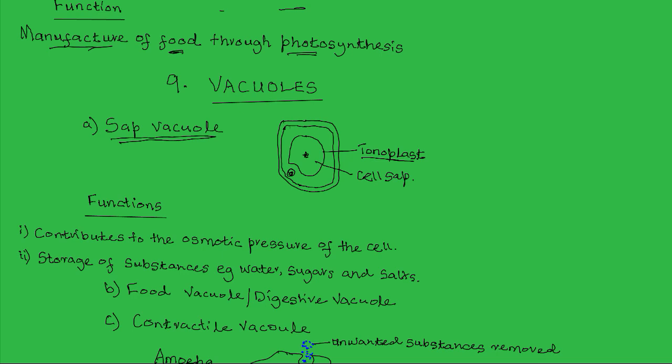Functions of the sap vacuole: One, it contributes to the osmotic pressure of the cell. The osmotic pressure is the tendency of a solution to draw in water from the surrounding. The stored salts and sugars in the cell sap contribute to the osmotic properties of the cell. The higher the concentration of the salts and sugars, the higher the osmotic pressure that will be generated by the sap vacuole, and the more the water that will be drawn into the cell from the surroundings.